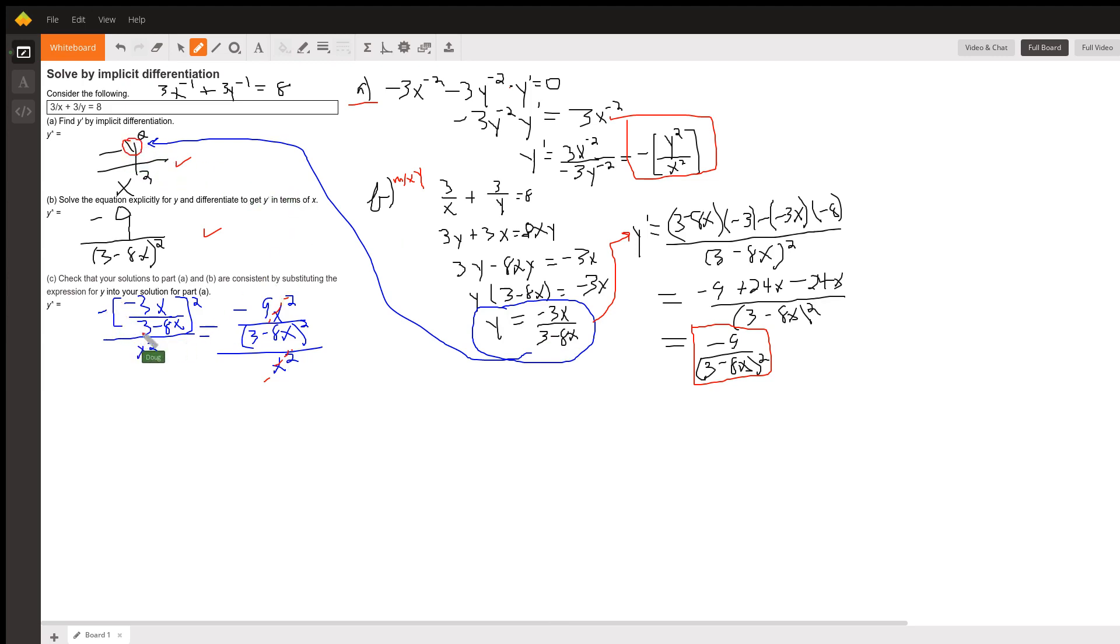There's minus y squared. Y, that minus 3x over 3 minus 8x. I'm squaring that quantity. So minus 3x squared is 9x squared, but I still have this minus sign out front. Over 3 minus 8x, the quantity squared with this x squared in the denominator.